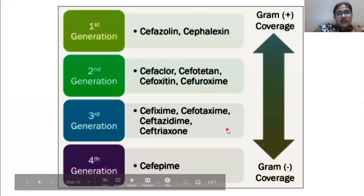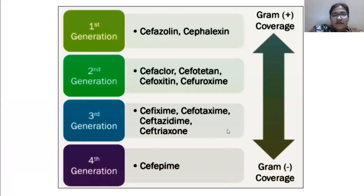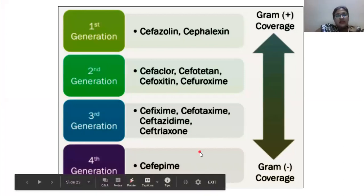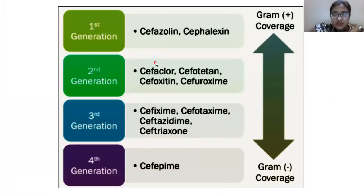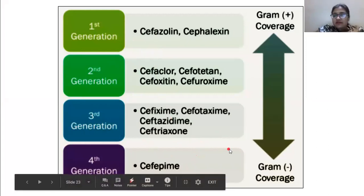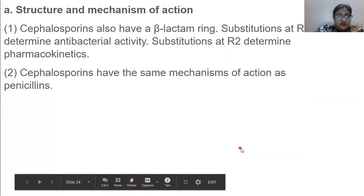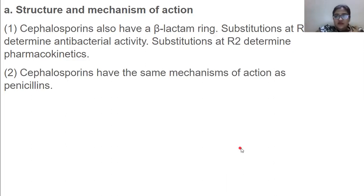When we talk about cephalosporins, there are five generations, but we'll focus on four here. The first two generations have good coverage against gram-positive bacteria, while the third and fourth generations target gram-negative bacteria. The structure and mechanism: substitution R1 determines antibacterial activity and substitution R2 determines pharmacokinetics. Cephalosporins share the same mechanism of action as penicillins.